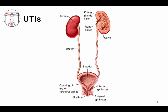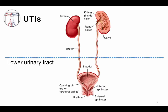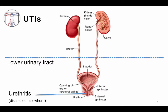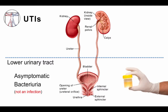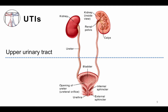An anatomical framework is helpful to think about urinary tract infections. We often divide them into the lower urinary tract, which includes cystitis or a bladder infection, urethritis, which is commonly caused by sexually transmitted infections and is discussed elsewhere, and asymptomatic bacteriuria, which is not technically an infection but an important clinical scenario. The upper urinary tract consists principally of the kidneys, an infection of which is called pyelonephritis, aka pyelo.